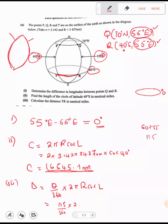You divide by 360, times 2, times 3.142, times the radius, is 3437 nautical miles, times cos 40. We're using cos 40 here because this is a small circle where they are.